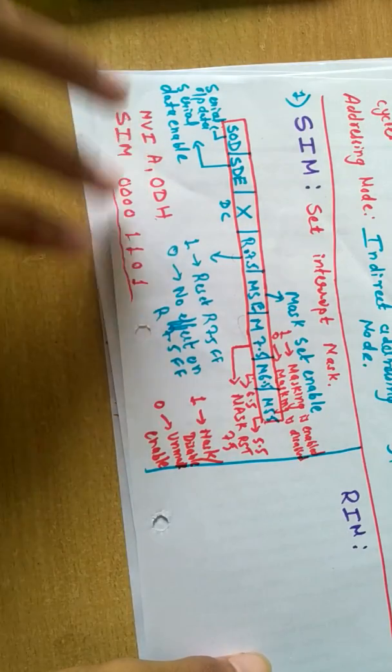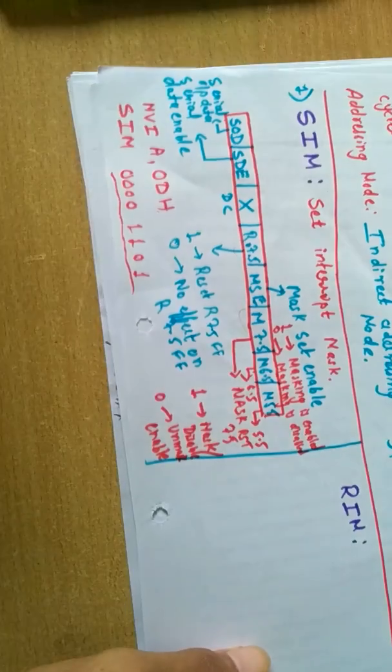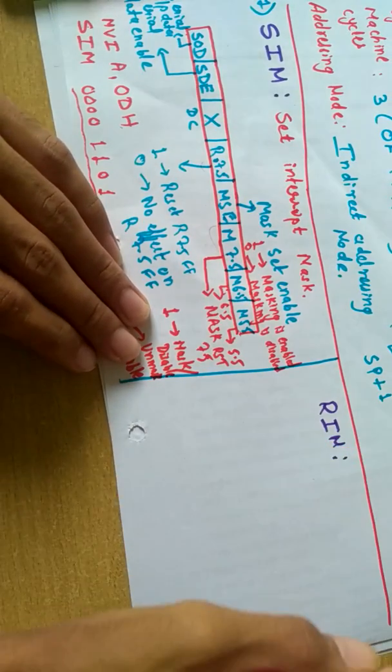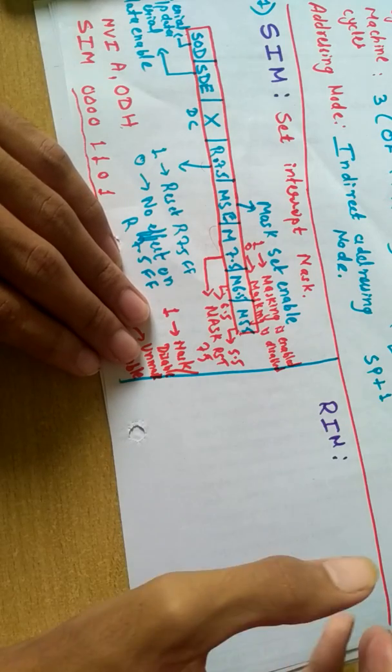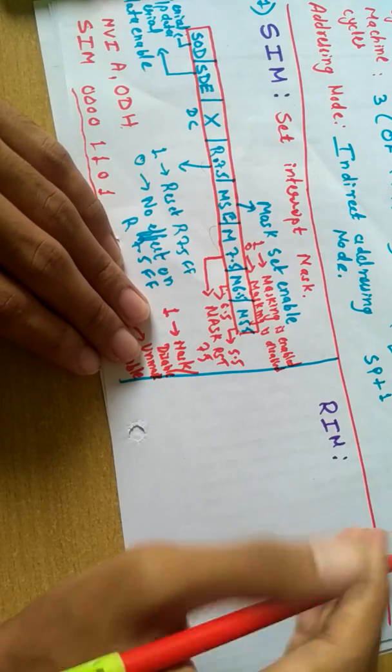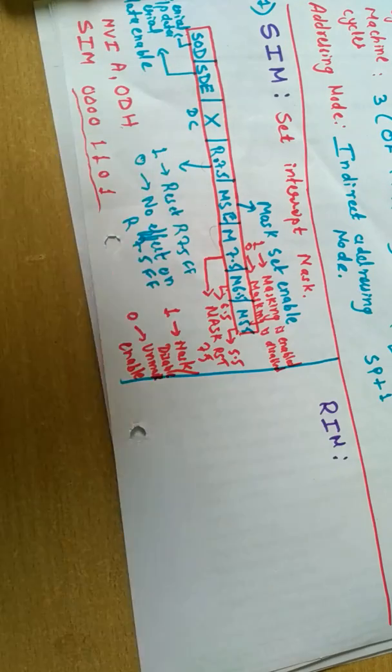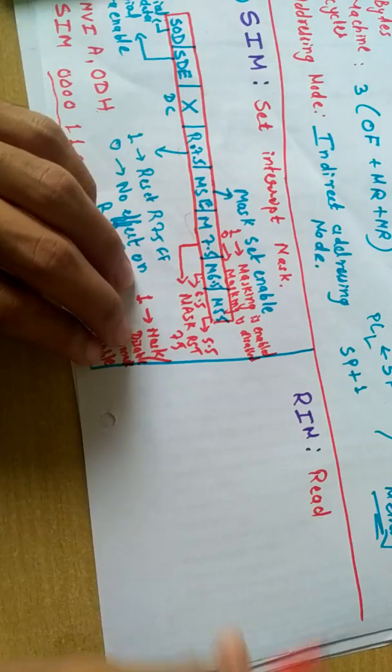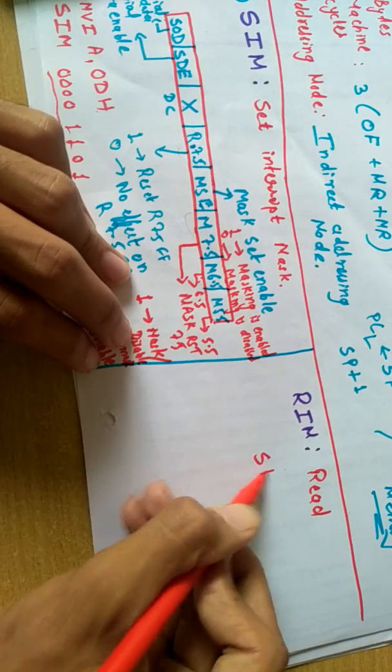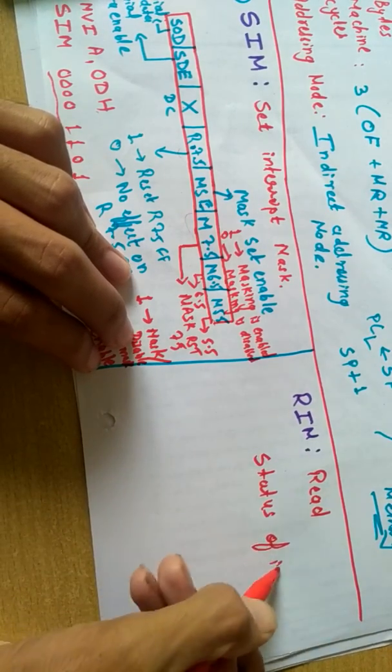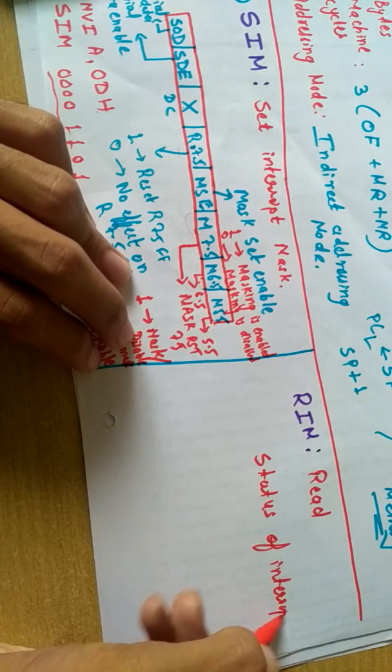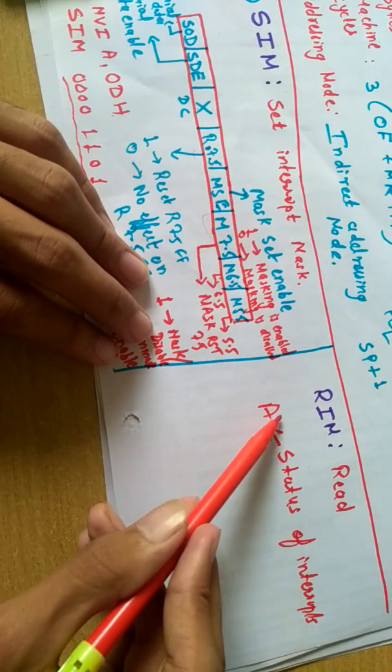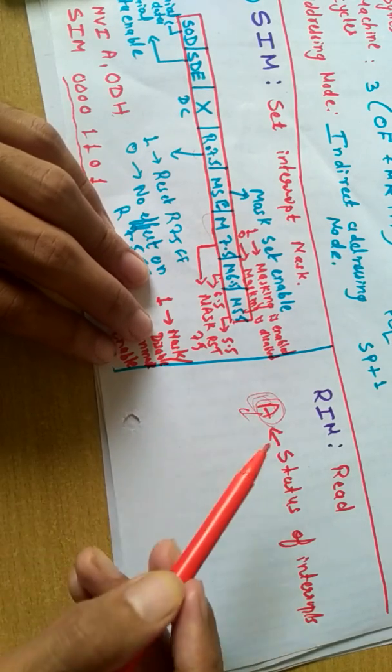What about RIM? RIM is just used for reading purpose - whatever is the current status of the interrupts in the microprocessor. It's used for purpose of reading, so it will transfer the status of interrupts to the accumulator. After writing RIM instruction and observing the accumulator, you can see the status.